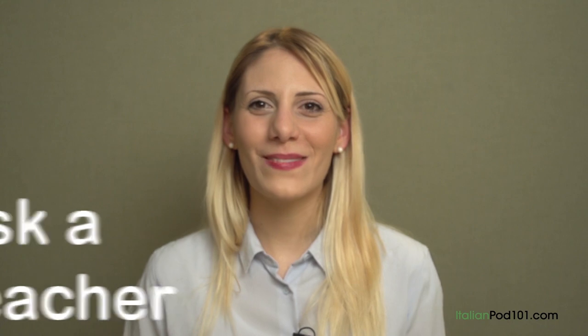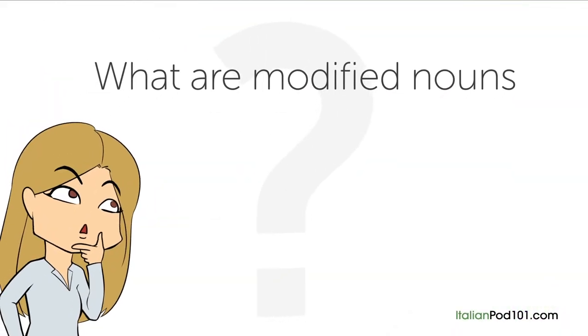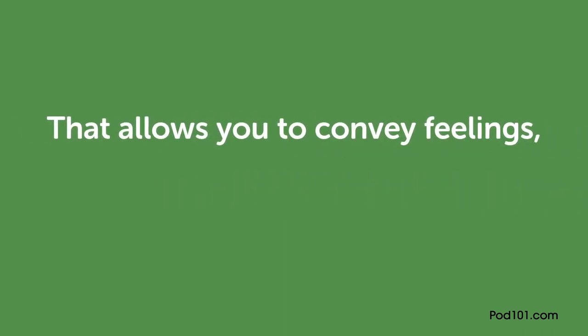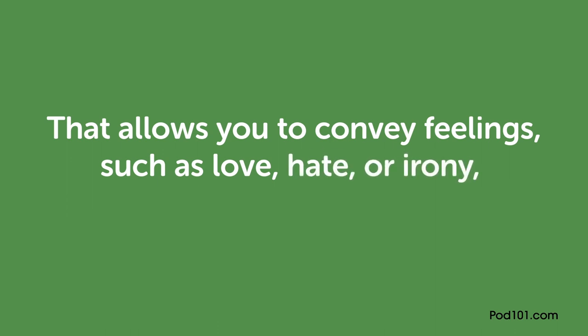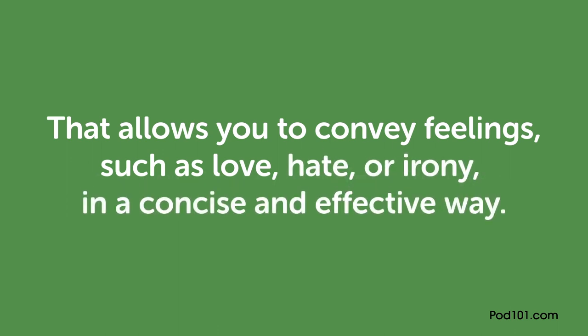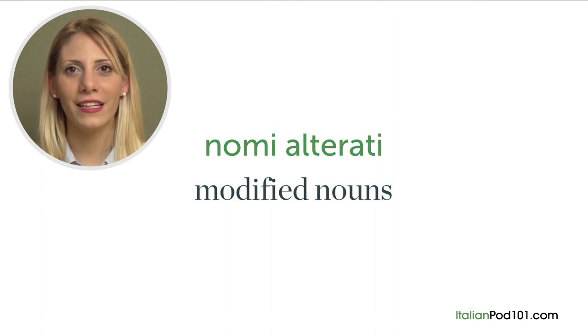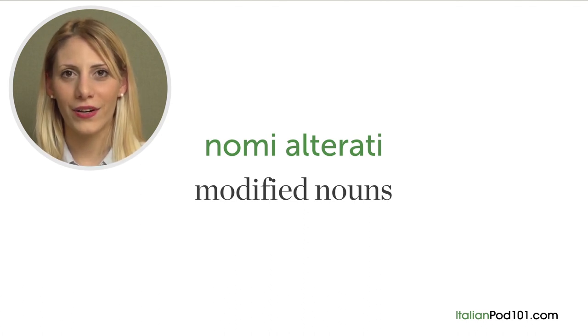Hi everybody, Marika here. Welcome to Ask a Teacher. The question for this lesson is: what are modified nouns? In Italian, you can modify nouns, which allows you to convey feelings such as love, hate, or irony in a concise and effective way. Modified nouns — called 'nomi alterati' — can take different endings that convey different feelings, and they are usually divided into categories.